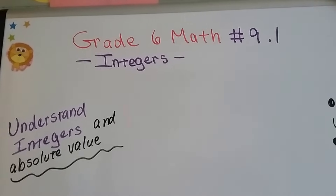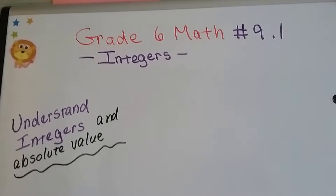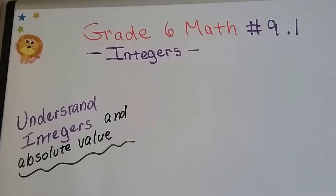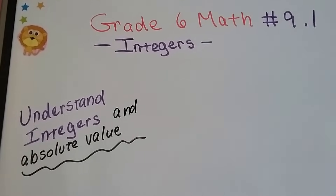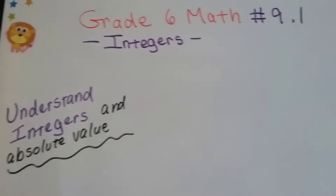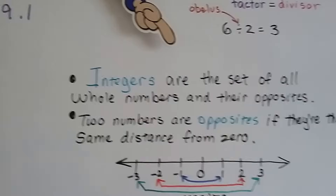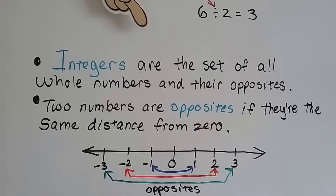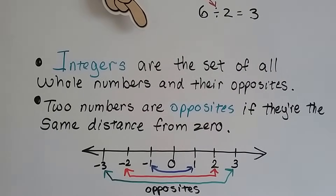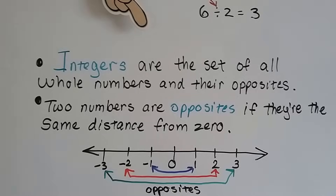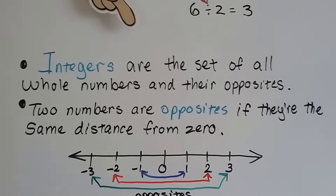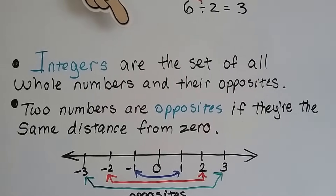Grade 6 math, number 9.1. This chapter we're doing integers. We're going to understand integers and absolute value. Integers are the set of all whole numbers and their opposites. So no fractions, no decimals. These are whole numbers and their opposites.